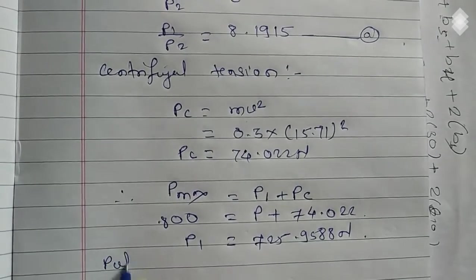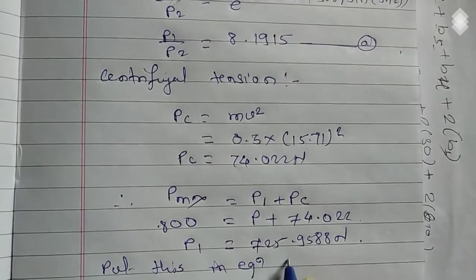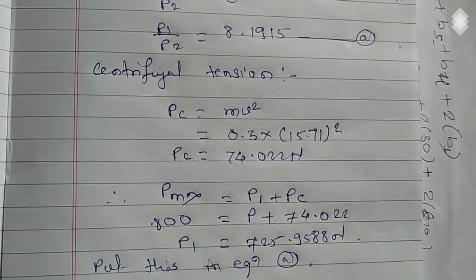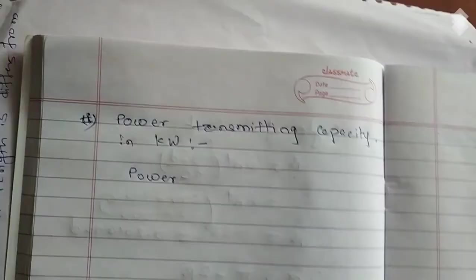And put this value in equation A. We get P2 is equal to 88.62 newton.